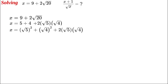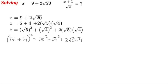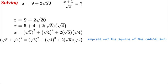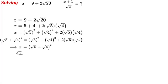Now that we have this, we can recall that the square root of 5 plus the square root of 4, all squared, is exactly what we have above — that is, the square root of 5 squared, plus the square root of 4 squared, plus twice the cross multipliers. So x equals the square root of 5 plus the square root of 4, all squared. Therefore the square root of x equals the square root of 5 plus the square root of 4.